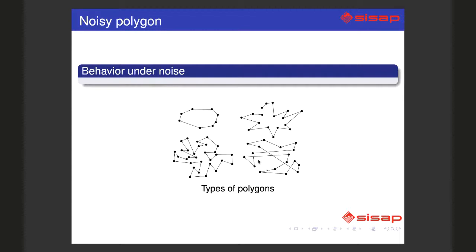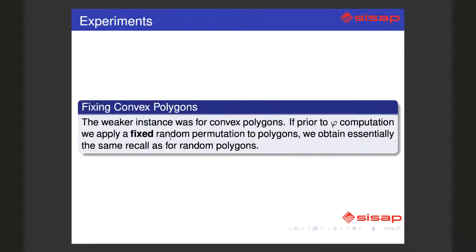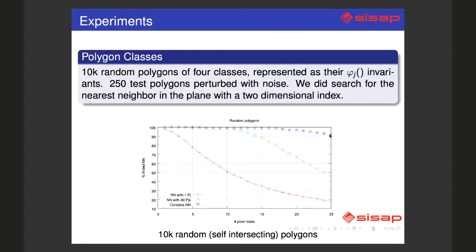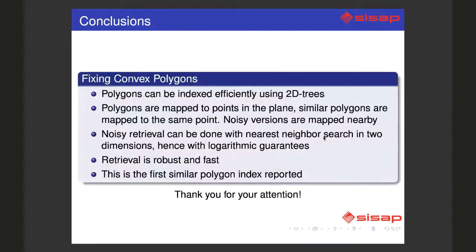After this fix, the recall we obtain is essentially the same as the random polygons, about 20-25 pixels. So that's pretty much what I wanted to share with you. The details are in the paper.